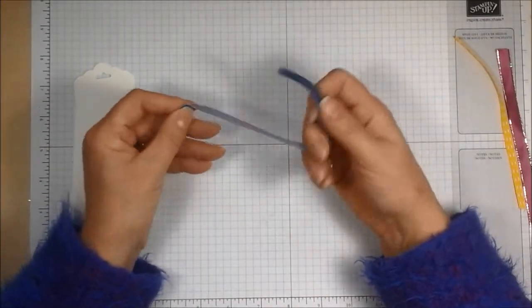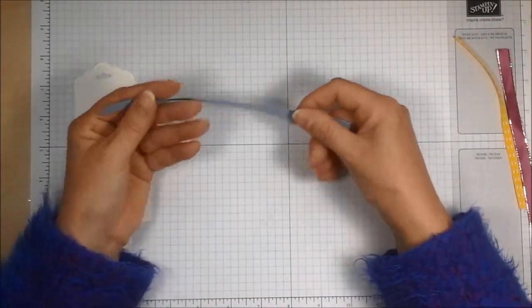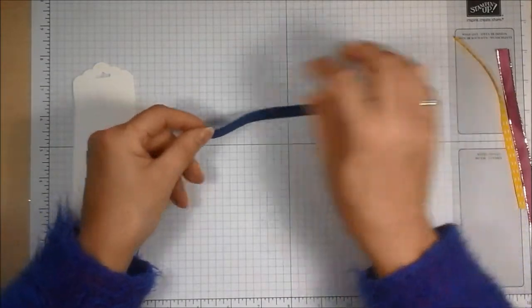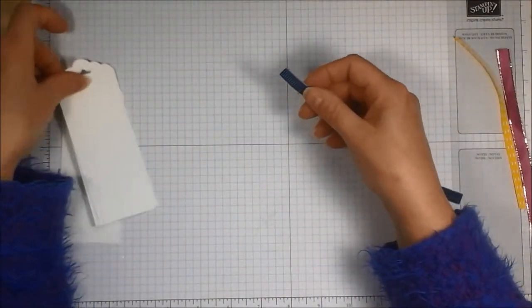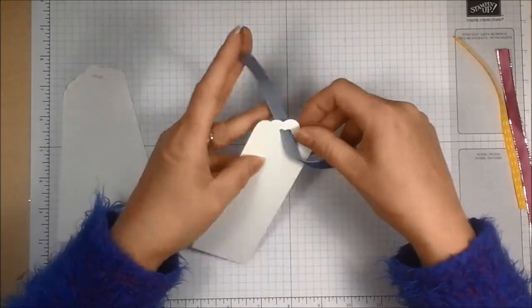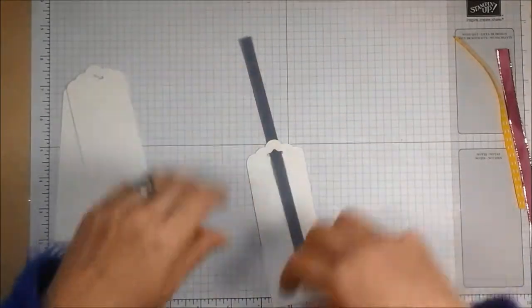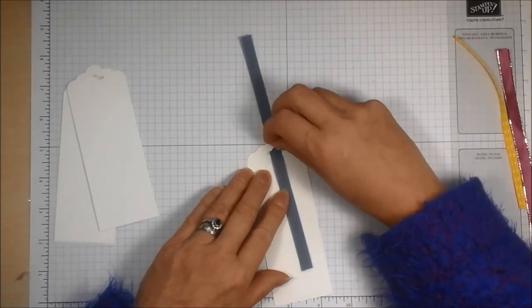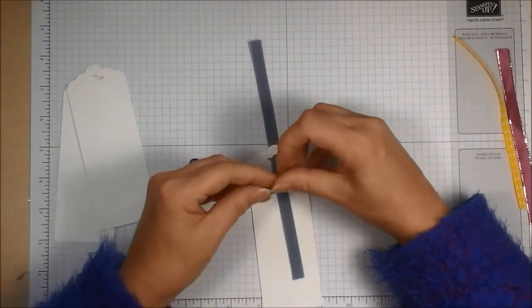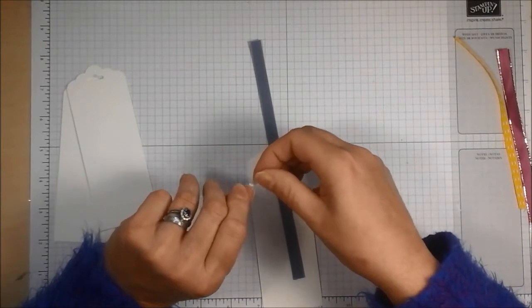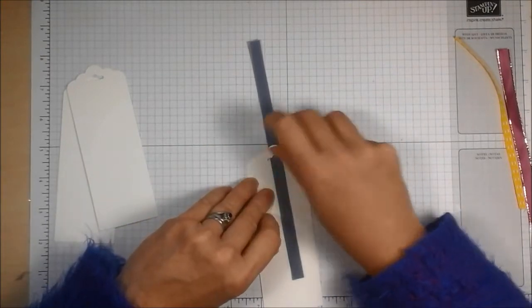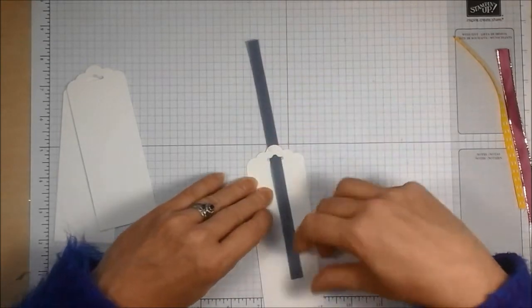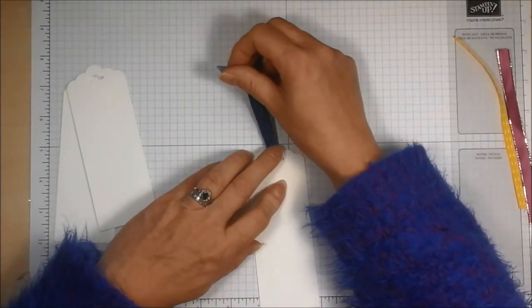Okay, but what happens when you come to ribbon that is one sided? This is the new Knight of Navy corduroy ribbon from Stampin' Up. And so for that, what I do is I will do the same thing with the mini glue dots. Put it, if I can get hold of it, not stick it to my thumb. There we go, one mini glue dot in that area and bring that up.